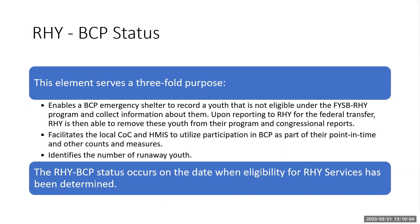RHY basic center status is a data element also located within the entry assessment, and it serves three purposes. It enables the emergency shelter to record a youth that is not eligible under FYSBI RHY programs and collect information. Upon reporting to RHY for the federal transfer, RHY is then able to remove these youth within the RHY repository for the federal reports. It allows facilitation for the local COC and HMIS to utilize participation under the basic center program as part of their point-in-time count and other data elements. And it identifies the number of runaway and homeless youth located within your COC. The RHY basic center program status occurs on the date when eligibility for the runaway and homeless youth services has been determined.